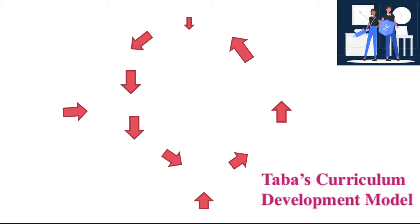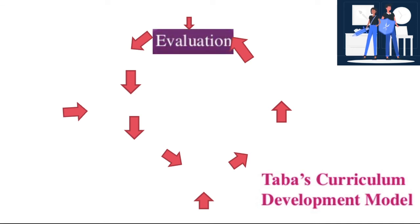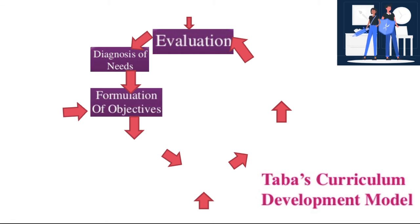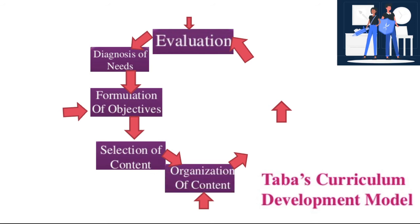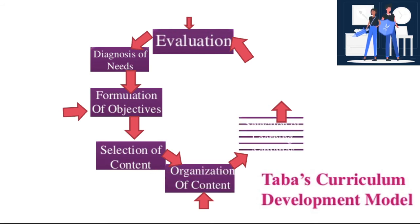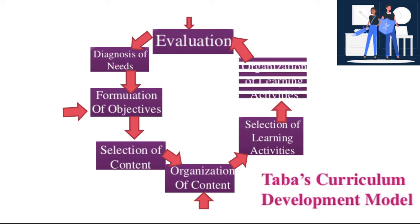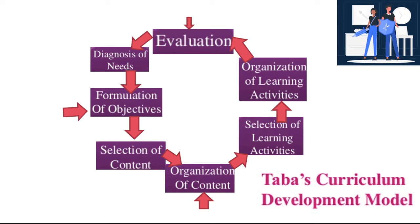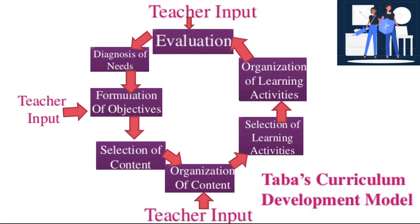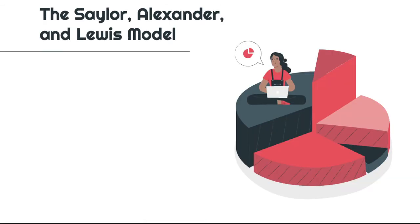Taba's curriculum development model includes first evaluation and diagnosis. Once you diagnose, formulation takes place, and selection proceeds. Once selected, organization of content occurs, together with the selection and organization of learning activities. This is then subjected to evaluation, wherein evaluation, formulation, and organization come from teachers' output.